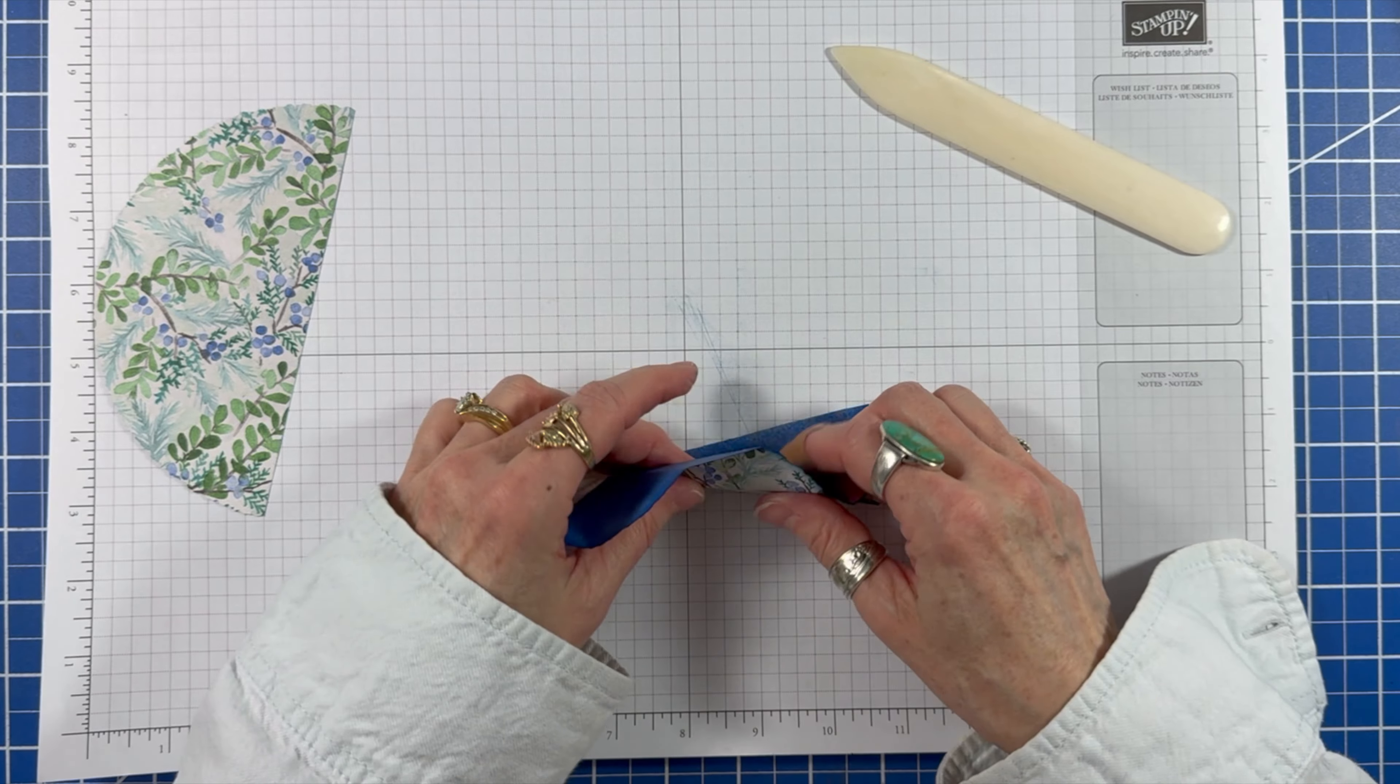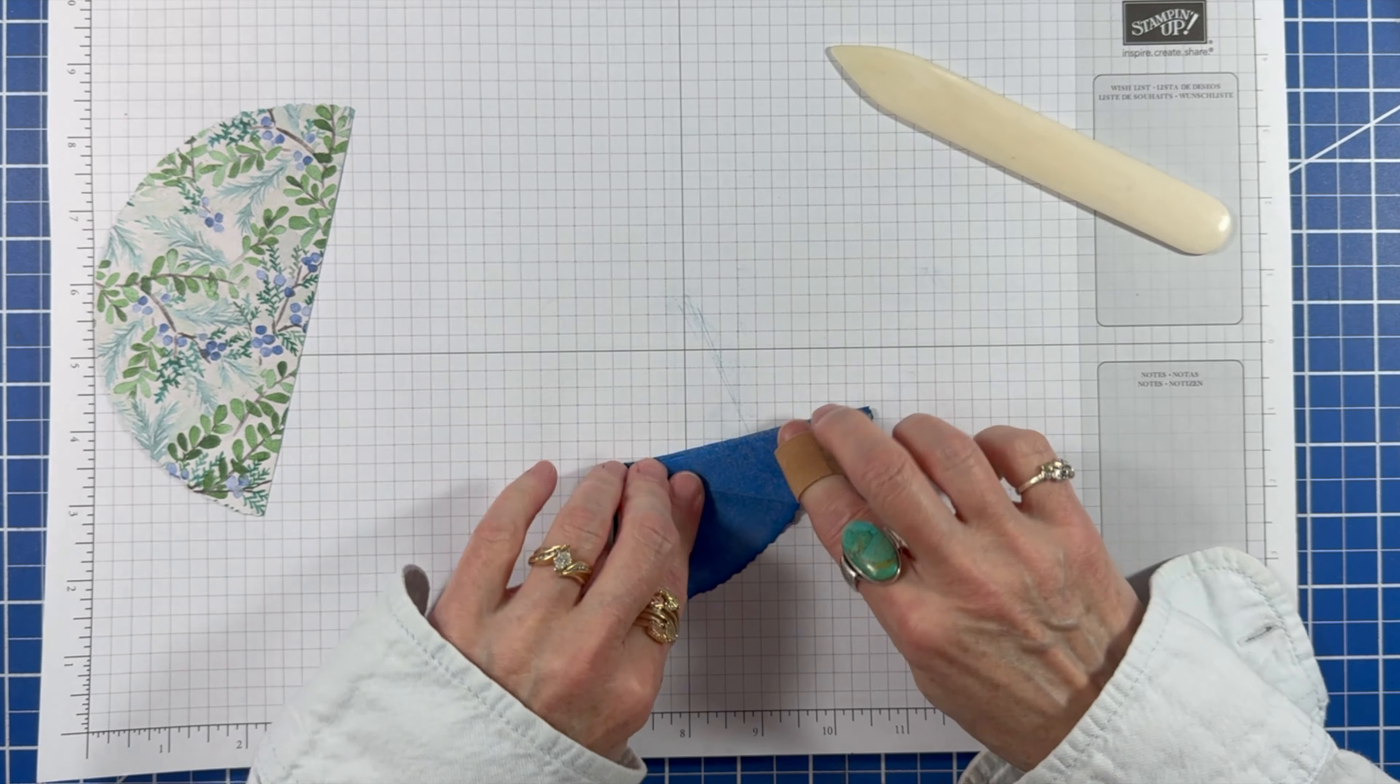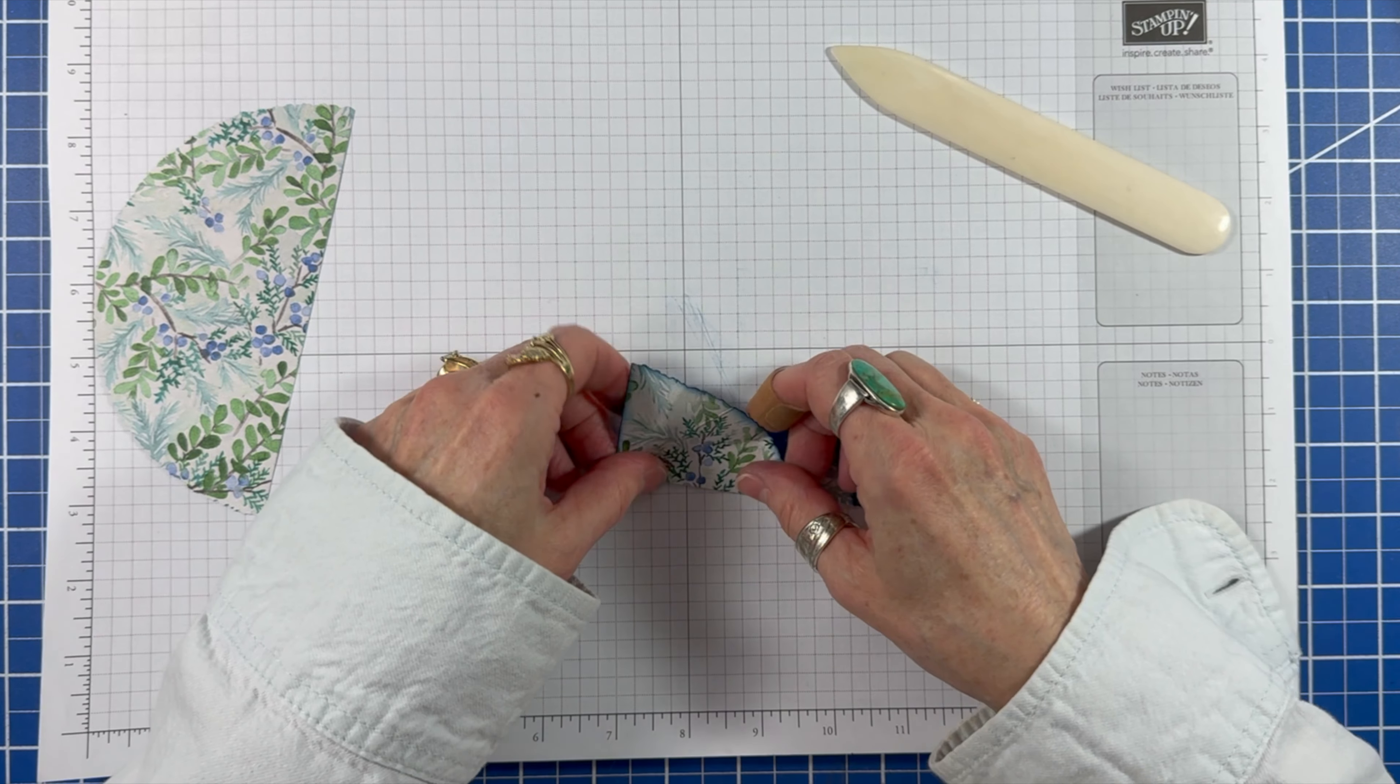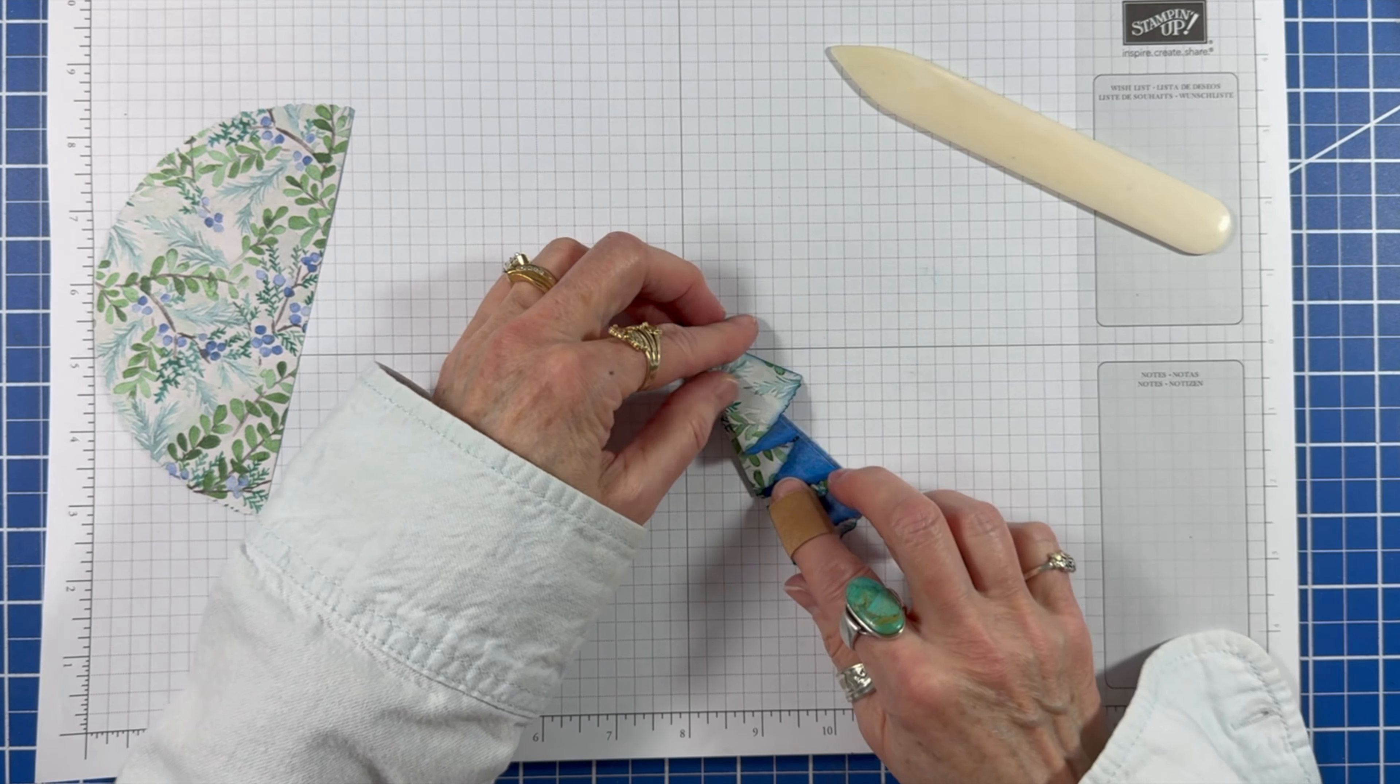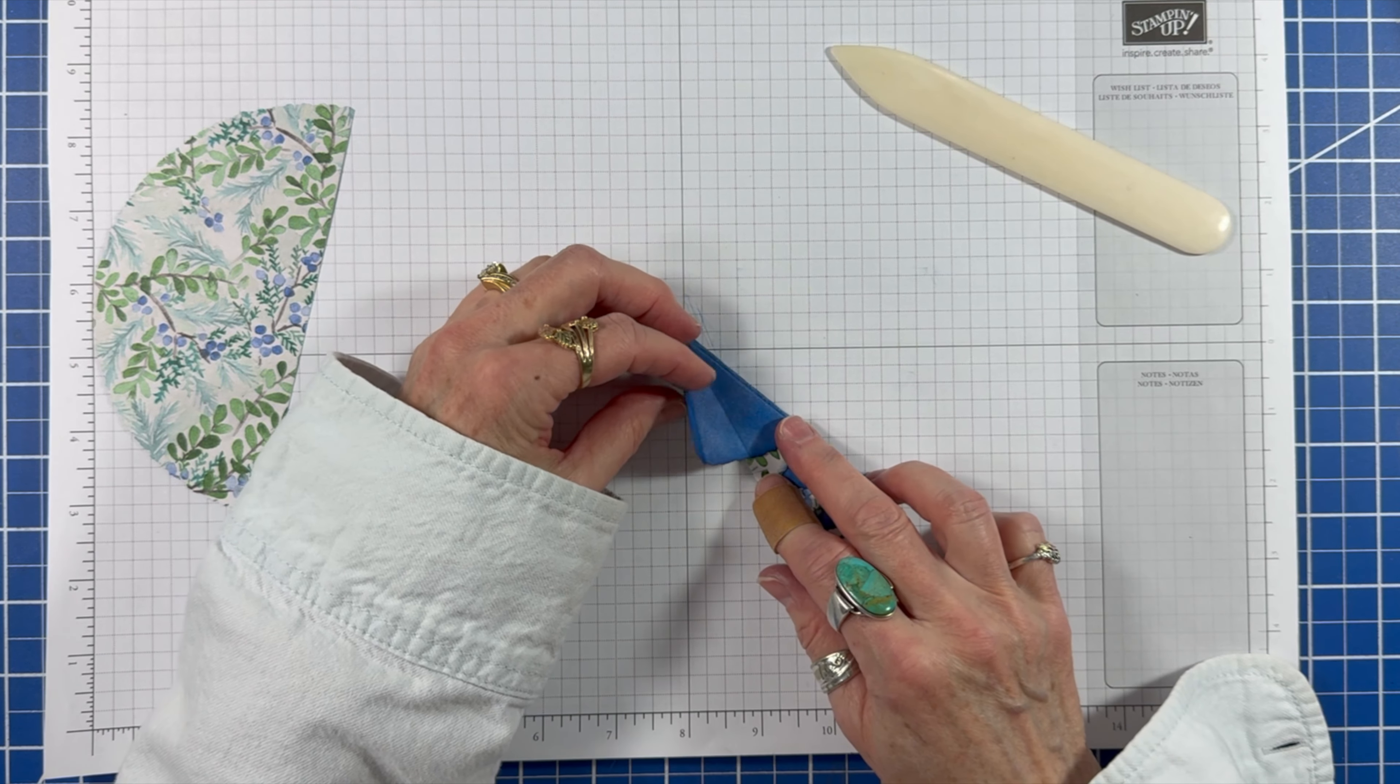And refold using accordion style pleats. The last panel can be folded in the same manner or tucked under. I'm tucking this one under because it kind of looks like a snow capped tree then.